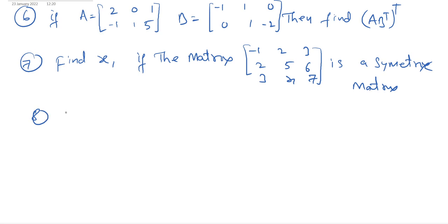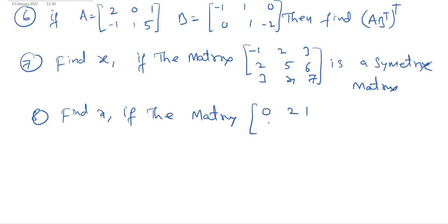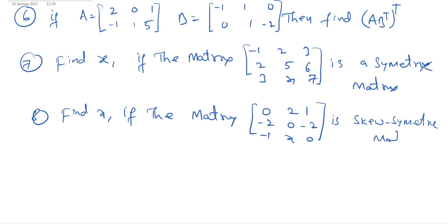Eighth question: find X if the matrix [0, 2, 1; −2, 0, −2; −1, X, 0] is a skew-symmetric matrix.